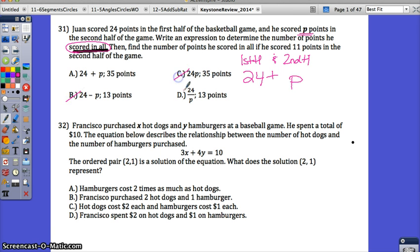That's going to rule out B, C, and D already. Then plug it in. If he scored 11 points in the second half, how much did he score total? Put in 11 for P. It would be 35, so the answer is A.